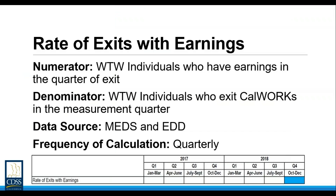Before moving on to the next three measures, let's address some questions that came in. The first was a request to repeat the definition of welfare-to-work individual. All of the questions and answers from this training and from Tuesday's training will be posted online, so you'll have it in writing. For the purposes of Cal-OR, welfare-to-work individuals are determined by aid code — adults in an AU with a single parent, two parent, non-MOE funded, or TANF timed-out aid code are included. If the individual has exited CalWORKs, the status is based on the most recent month on CalWORKs aid.